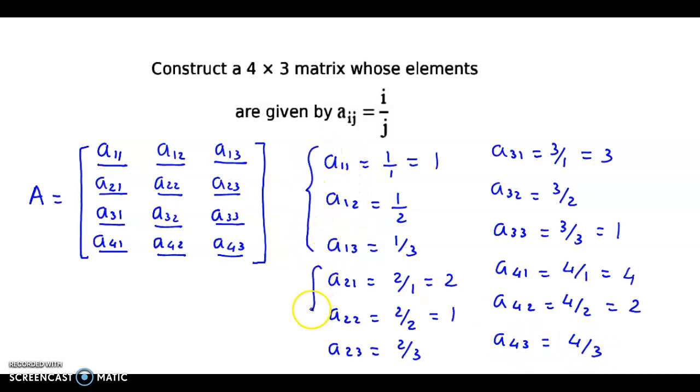So, these are our first row elements, these are second row elements, these are third row elements and these are fourth row elements. We just put down all these elements: here 1, then half, then 1 by 3; next is 2, 1, 2 by 3; third row 3, 3 by 2, 1; and fourth row elements have 4, 2, and 4 by 3. This is the required matrix.